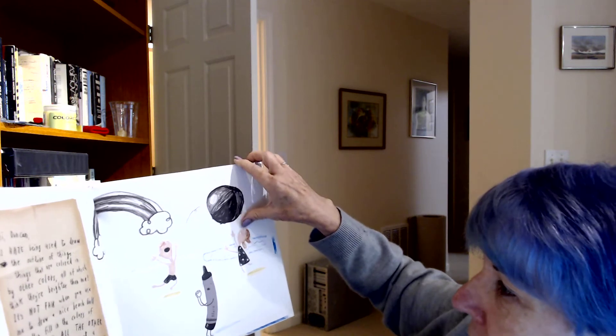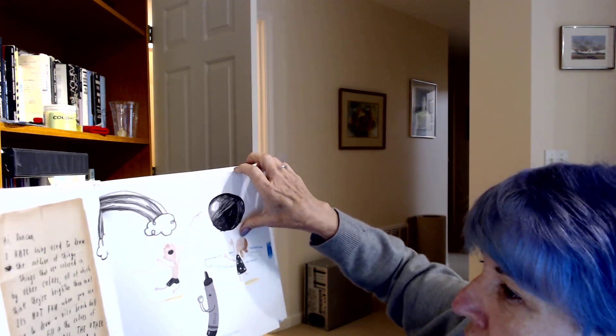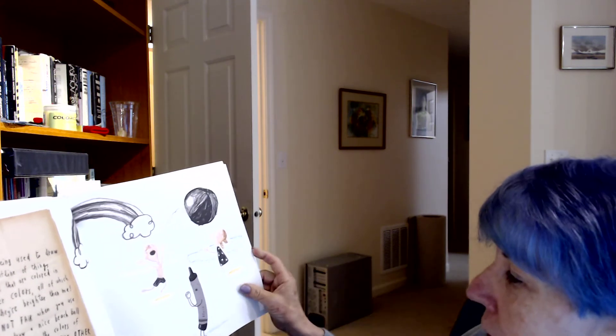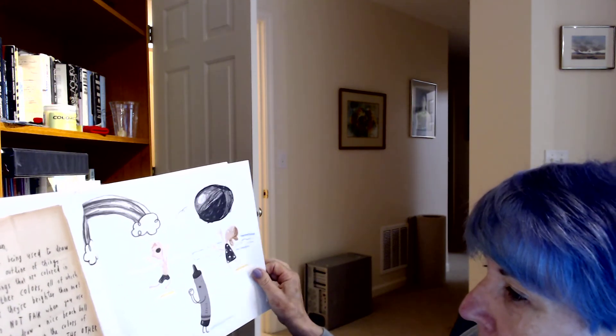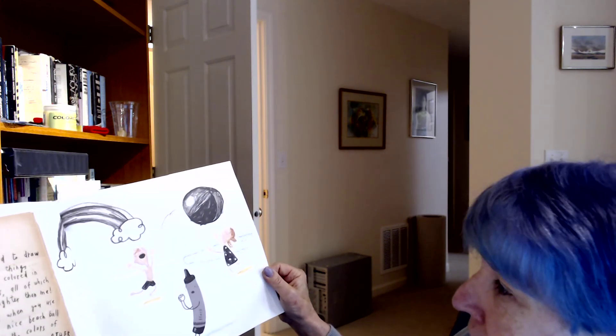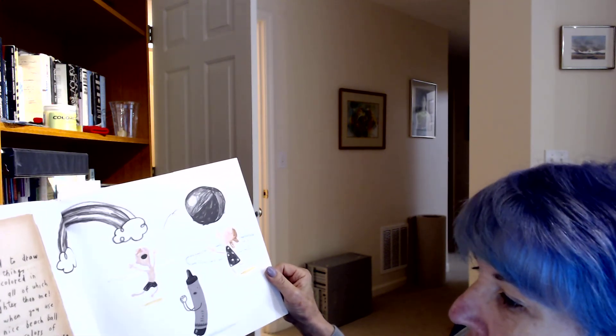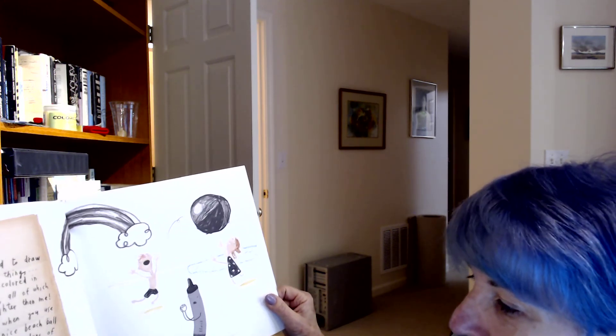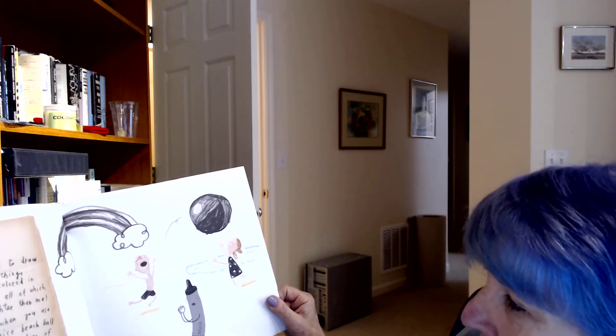Hi, Duncan. I hate being used to draw the outlines of things, things that are colored in by other colors, all of which think they're brighter than I am. It's not fair when you use me to draw a nice beach ball and then fill in the colors of the ball with all the other crayons. How about a black beach ball sometime? Is that too much to ask? Your friend, Black Crayon.